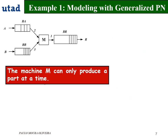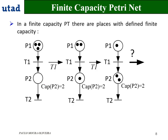As the machine can only produce one part at a time, we need to limit its capacity. The question is how to limit the capacity of a place. For that, we introduce the finite capacity Petri Net. In a finite capacity Petri Net, places have a capacity label — for example, the capacity of P2 is 2 — meaning the number of tokens in that place cannot exceed 2. When we fire T1 twice, we get two tokens in P2, which is the maximum.